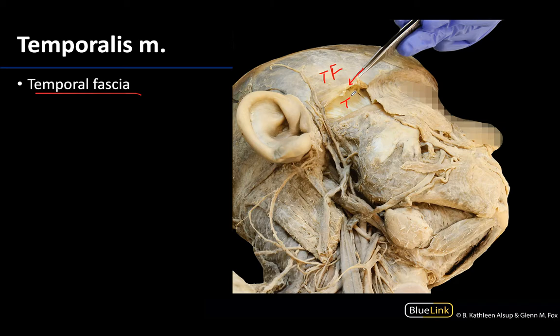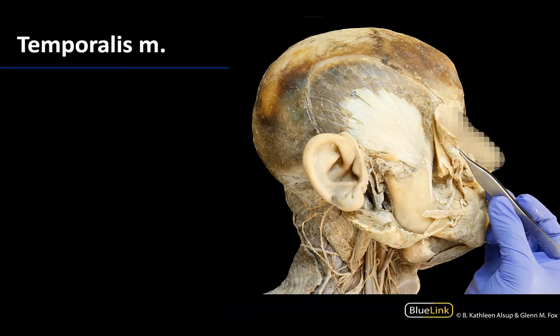Once you pull up the temporal fascia and remove it, you look directly at the muscle fibers and tendons of the temporalis muscle. It's a pretty wide expanse compared to many of the other muscles of mastication. This muscle extends from the temporal fossa superiorly down to the coronoid process, portions of the ramus, and the temporal crest of the mandible.